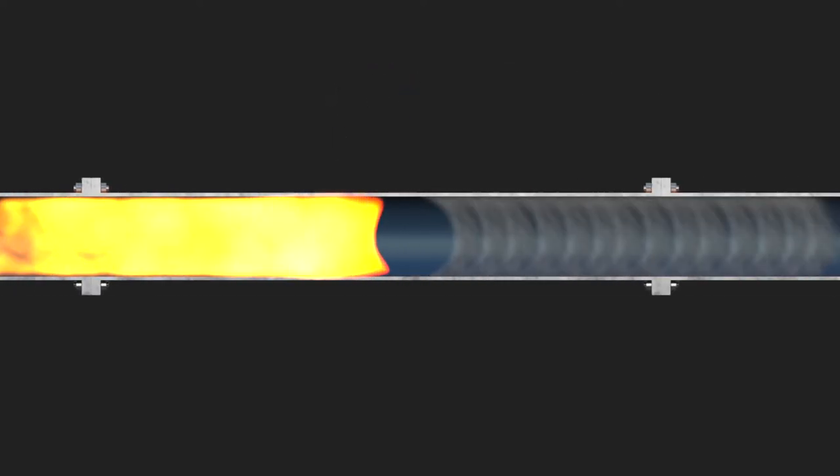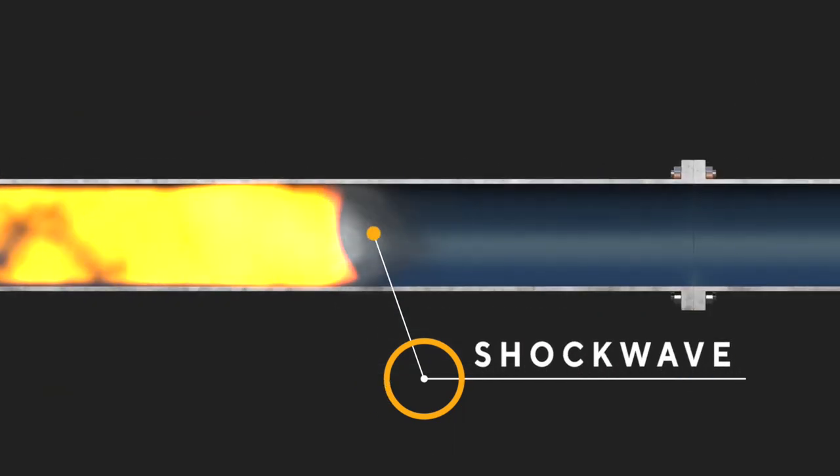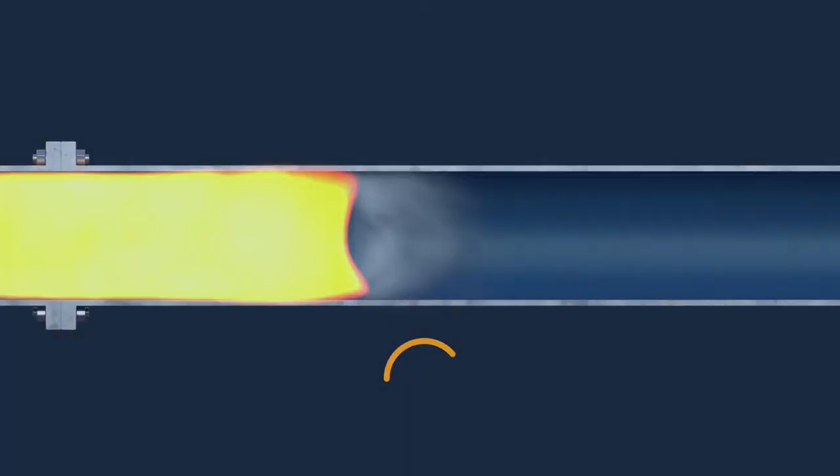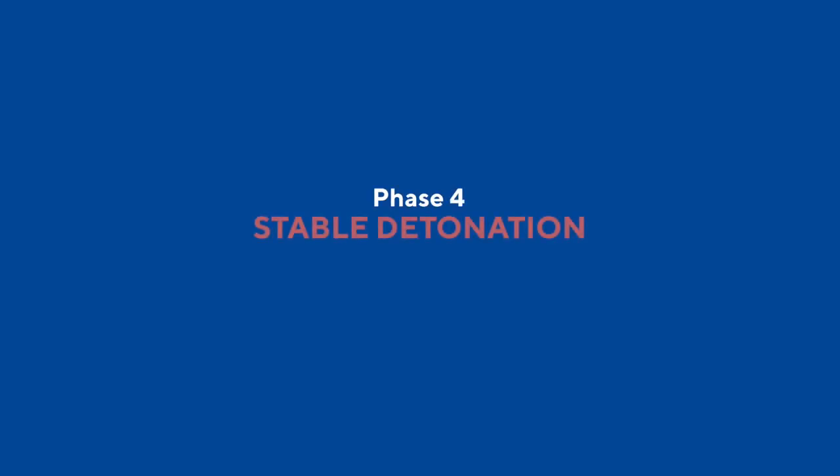Peak pressures often well in excess of 100 bar. Phase four: stable detonation. Following a DDT, an unstable detonation will degrade to a less severe stable detonation.